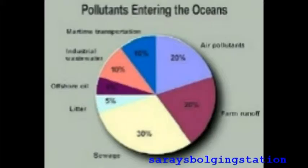Pollution of the aquatic environment also includes oil fuels and air pollutants. The graph illustrates the main causes of pollution in the ocean, showing that the major causes are sewage, air pollution, and farm runoff.